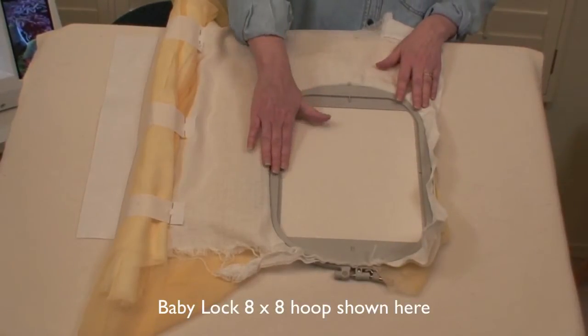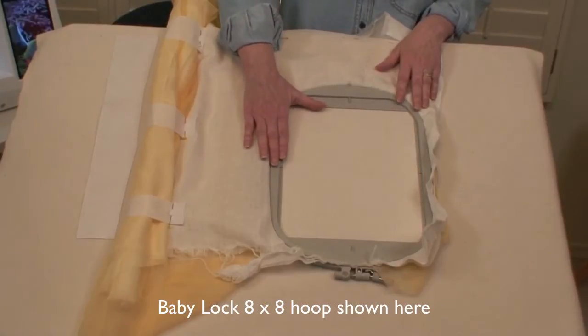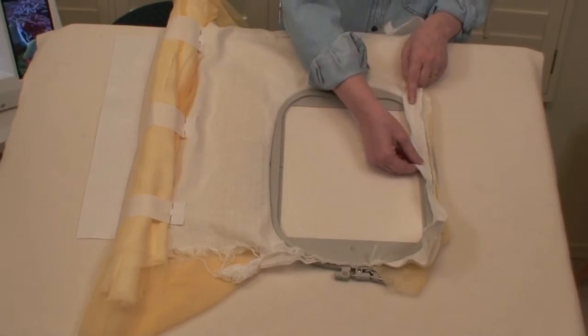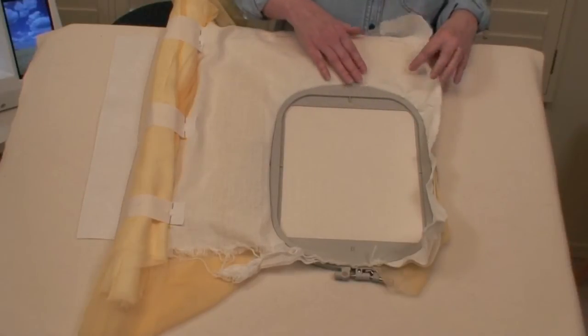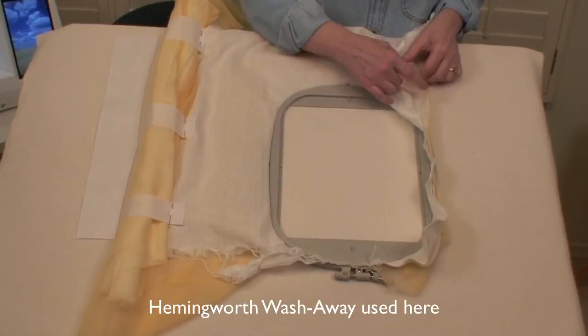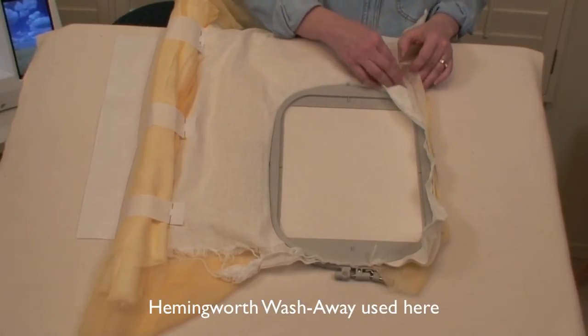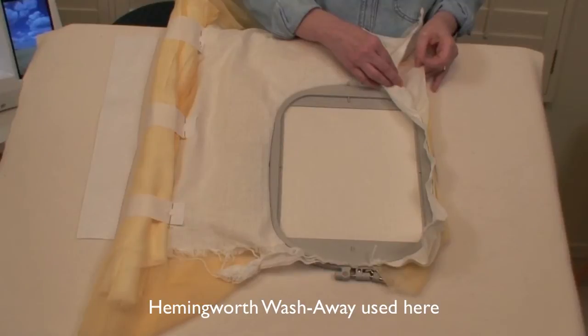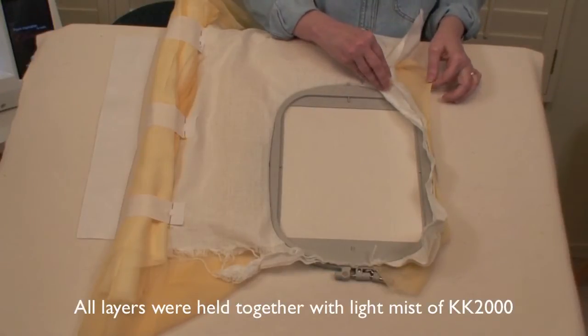Now because it nearly maxes out my hoop, I need to get my fabric hooped pretty straight to start with. So I have hooped my linen and I have starched this to a level of extra crispy. And I have two layers of wash-away stabilizer. This is a fiber-based stabilizer. It's going to hold up better than a film.